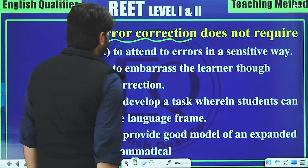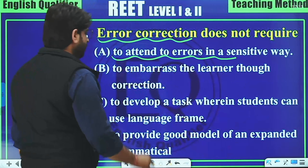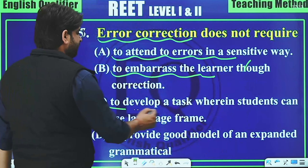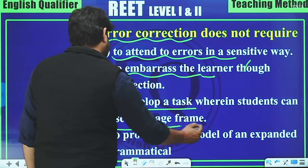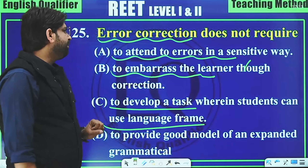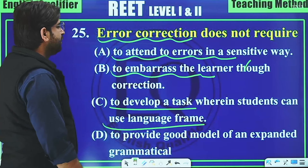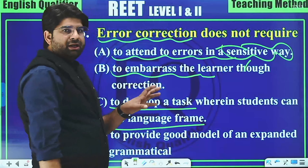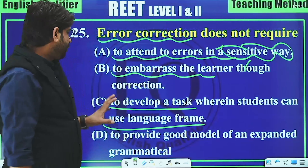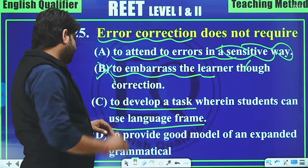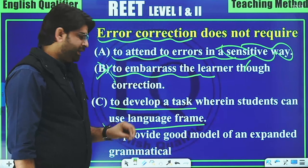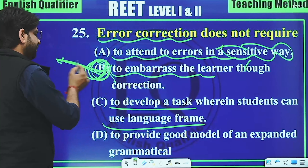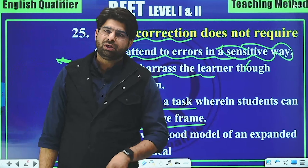Question 25: Error correction does NOT require which of the following — attending to errors in a sensitive way, impressing/embarrassing the learners, developing tasks where students use language frames, or providing good models of expanded grammatical structure? Attending to errors sensitively, developing tasks, and providing good models are all required, but embarrassing or shaming children is NOT part of error correction. So option B is correct.